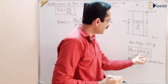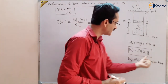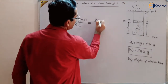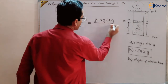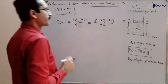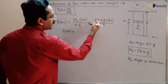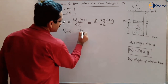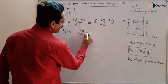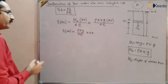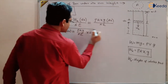Substituting wx = ρAxg, we get δ(dx) = ρAxg · dx / AE. Since ρ, A, g, A, and E are all constants, this simplifies to (ρg / E) × x dx. This is the small deformation in the small element dx, and these small deformations add up to give the total deformation in the bar from 0 to L.